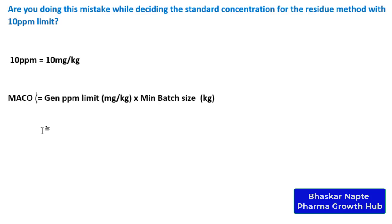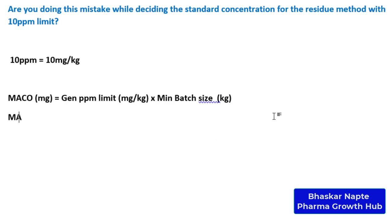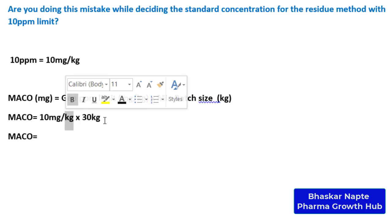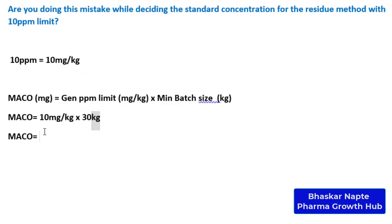We end up getting MACO in milligram. MACO is the maximum allowable carryover of the previous product into the next product. Your general ppm limit is 10 milligram per kg. Assuming your minimum batch size is 30 kg, putting the values in: 10 mg/kg multiplied by 30 kg — the kg units cancel — and you get 300 mg as the MACO.